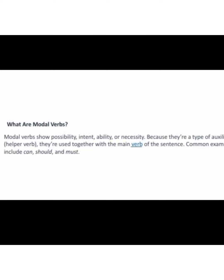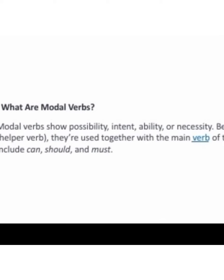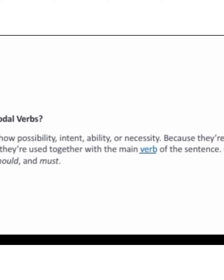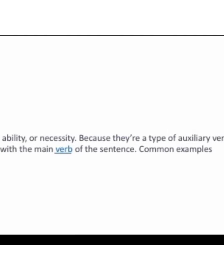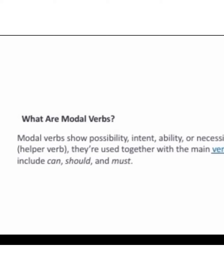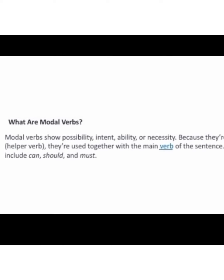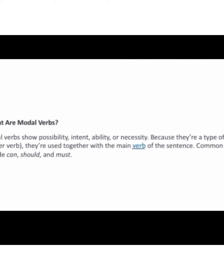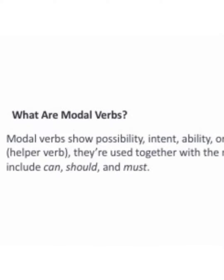So children, what are modal verbs? Modal verbs show possibility, intent, ability, or necessity. They are a type of auxiliary verbs or helper verbs, and they are used with the main verb of the sentence. Some common examples of modal verbs are can, should, could, must, and might.